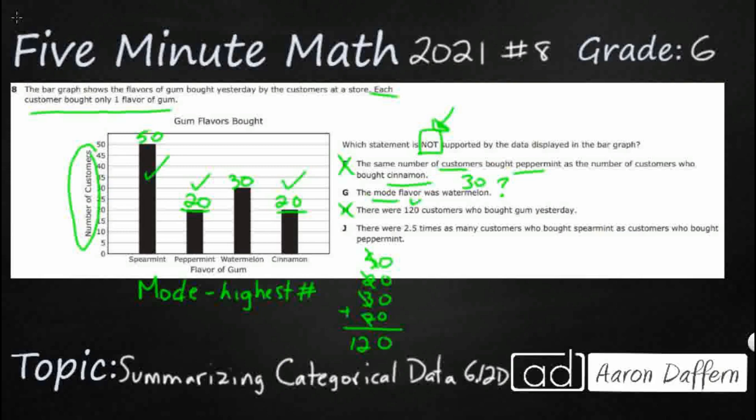So now let's just eliminate J. And then we can go back and say G is our correct answer. There were 2.5 times as many customers who bought spearmint as who bought peppermint. Now that is an interesting one.